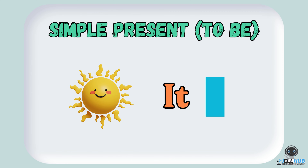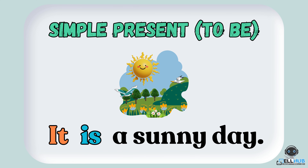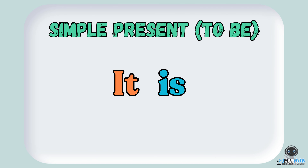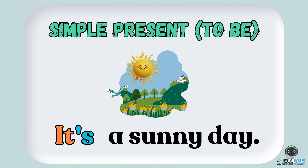We use is with it. For example: it is a sunny day. But in everyday conversation, we often use the contraction it's, like it's a sunny day.